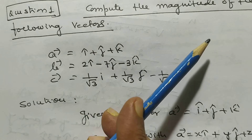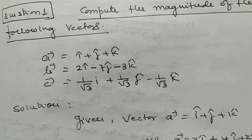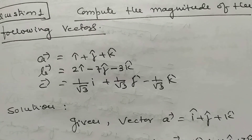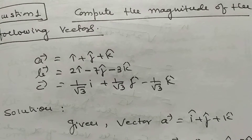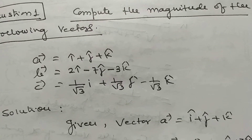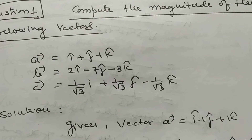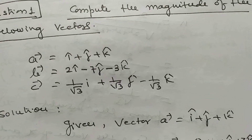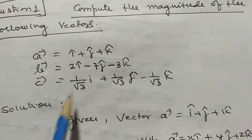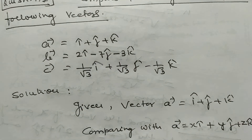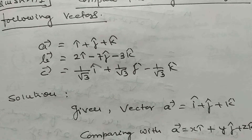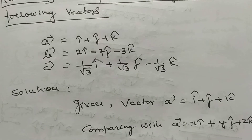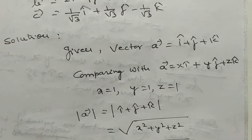The first problem is: compute the magnitude of the following vectors. Vector A is equal to unit vector i plus unit vector j plus unit vector k. Vector B is equal to 2i-cap minus 7j-cap minus 3k-cap. Vector C is equal to (1/√3)i-cap plus (1/√3)j-cap minus (1/√3)k-cap. It is given that vector A equals i plus j plus k.